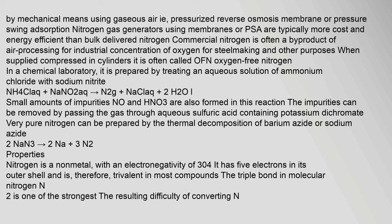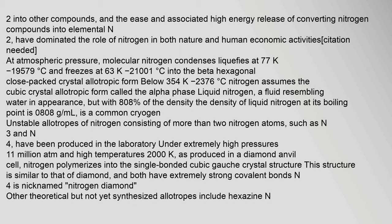Commercial nitrogen is often a byproduct of air processing for industrial concentration of oxygen for steelmaking and other purposes. When supplied compressed in cylinders it is often called OFN (oxygen-free nitrogen). In a chemical laboratory, it is prepared by treating an aqueous solution of ammonium chloride with sodium nitrite. Very pure nitrogen can be prepared by the thermal decomposition of barium azide or sodium azide. Nitrogen is a nonmetal with an electronegativity of 3.04; it has 5 electrons in its outer shell and is therefore trivalent in most compounds.